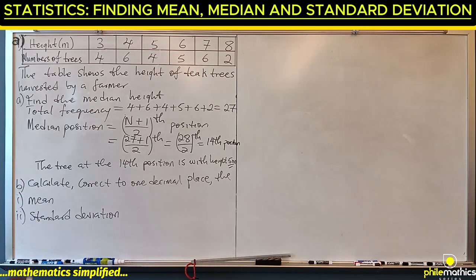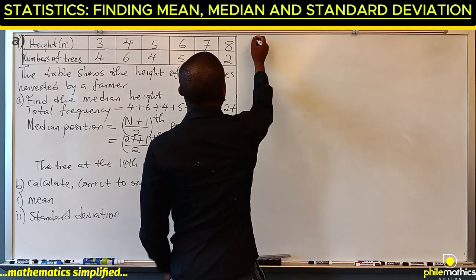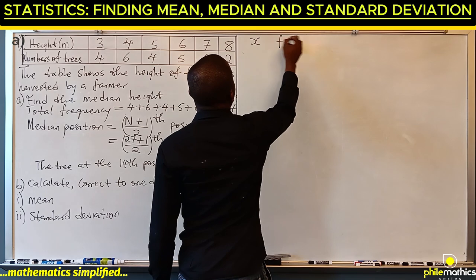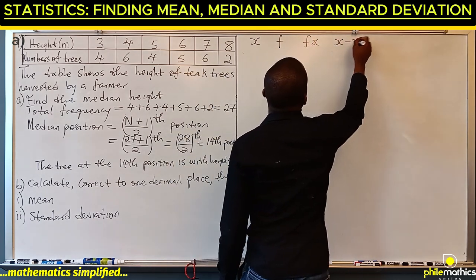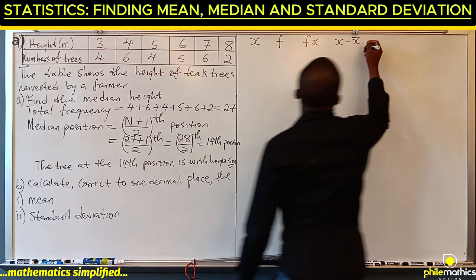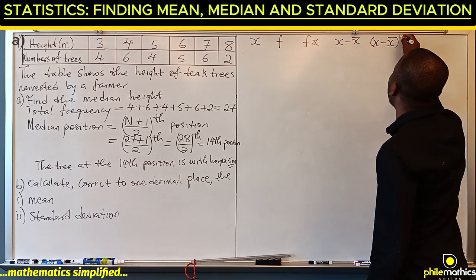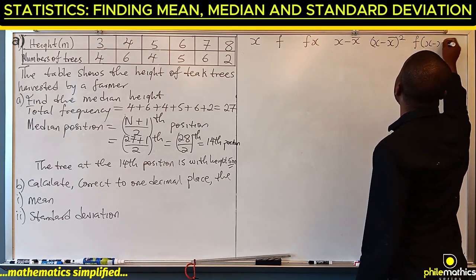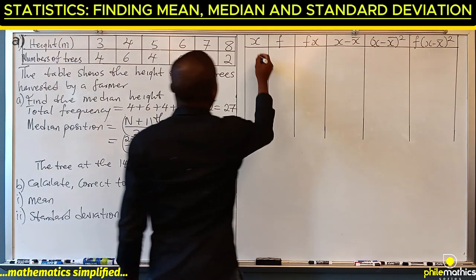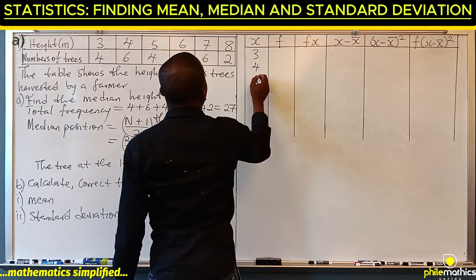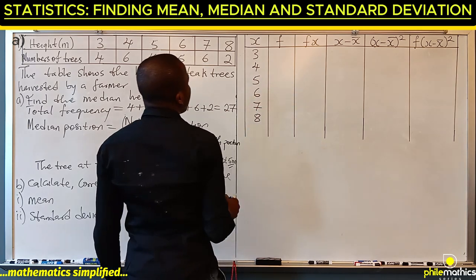Let's draw the frequency table. We need columns for x, f, fx to get the mean, x minus x-bar to get the deviation, and (x minus x-bar) squared to get the standard deviation. The x values are three, four, five, six, seven, and eight.